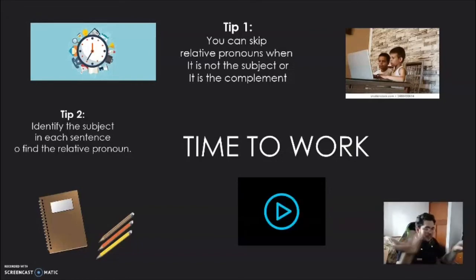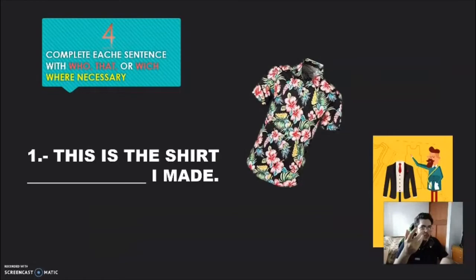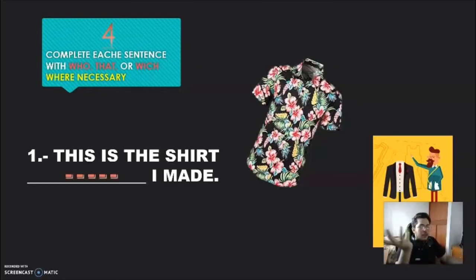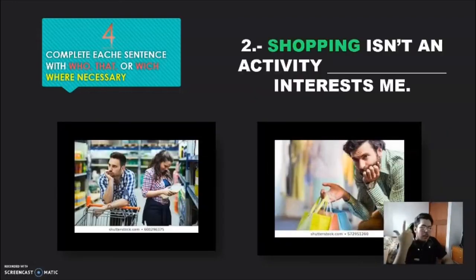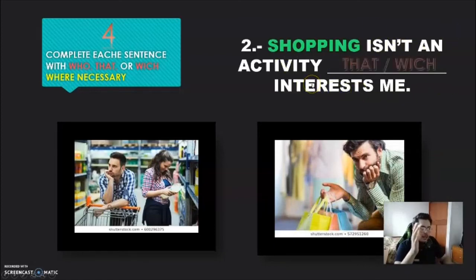Did you finish? Excellent. Let's check the answers. Number one: 'This is the shirt ___ I made.' The correct option is nothing — no pronoun. Why? Because the important thing is 'I made,' not the shirt, so we can skip the relative pronoun. Number two: 'Shopping isn't an activity that/which interests me.' Here the subject is 'shopping,' which is a thing, so we use 'which' or 'that.'